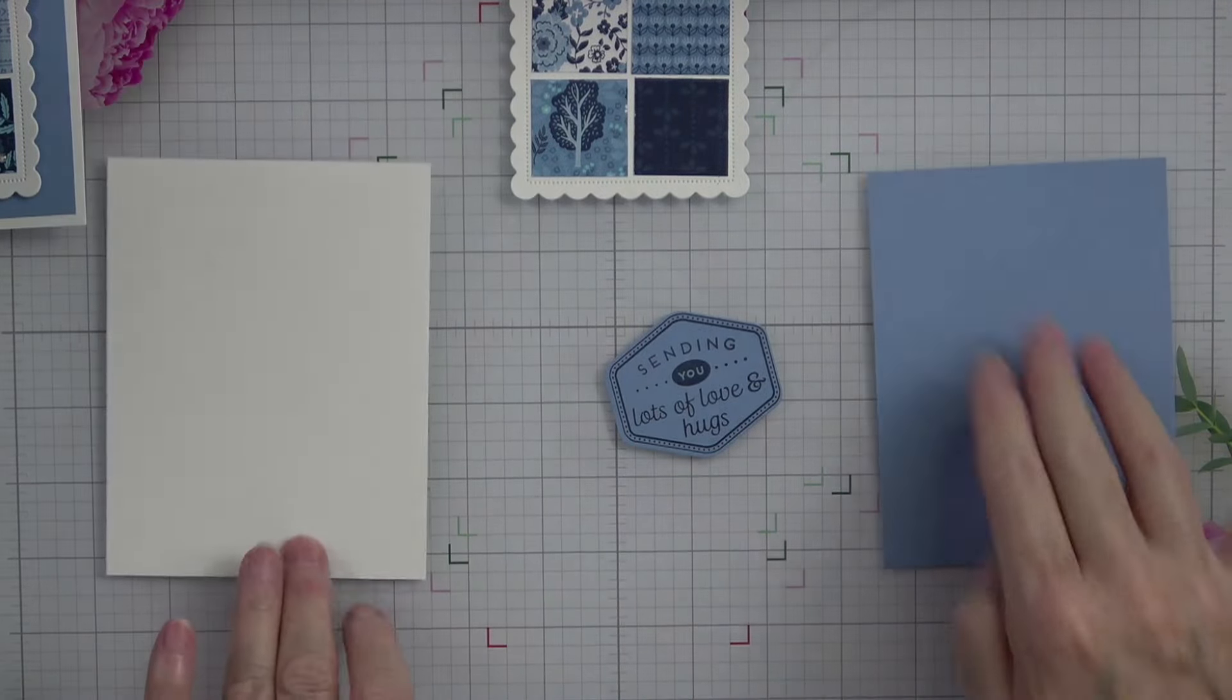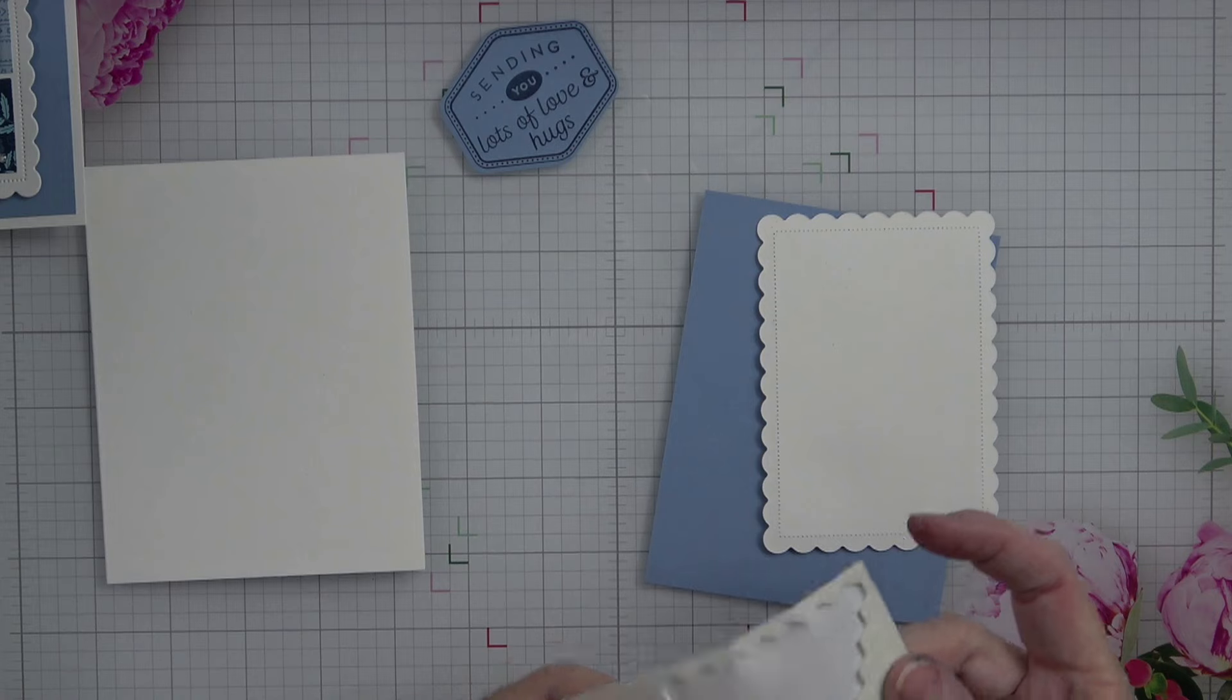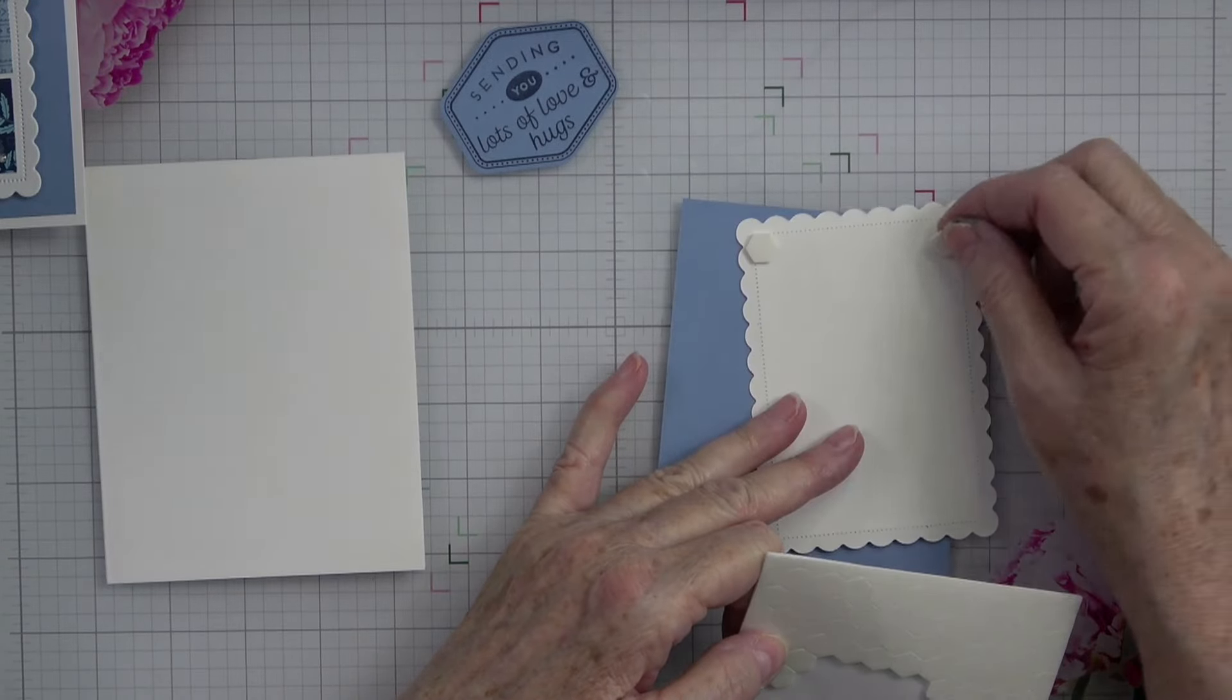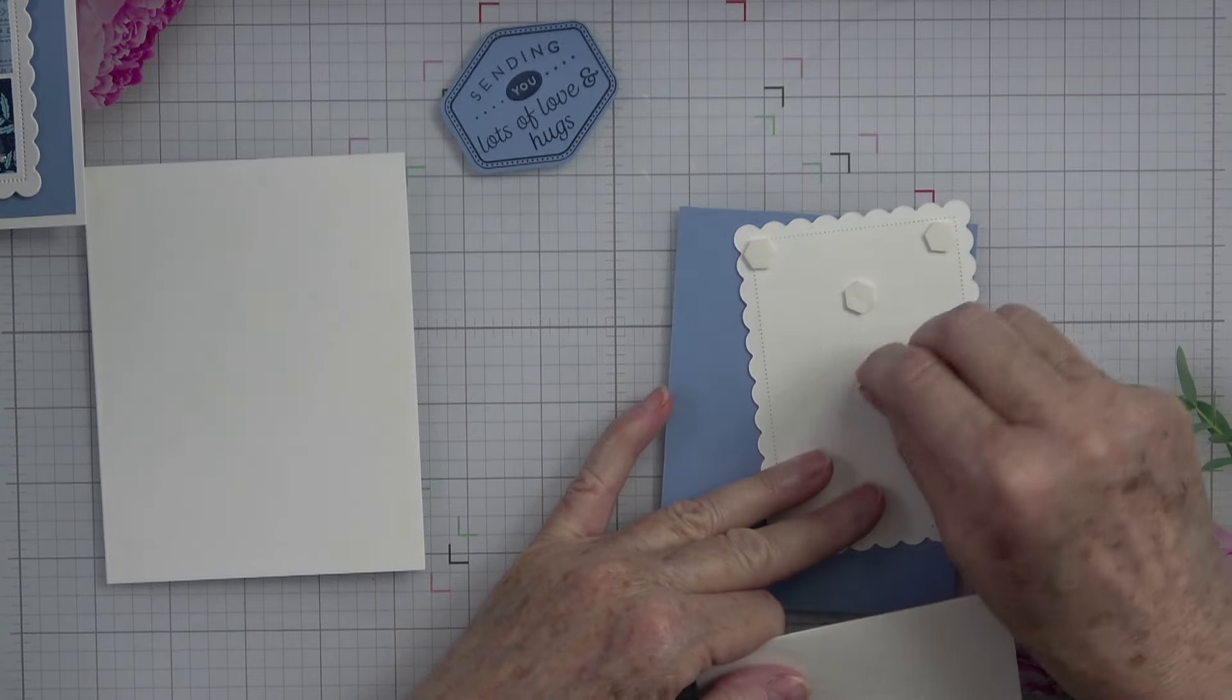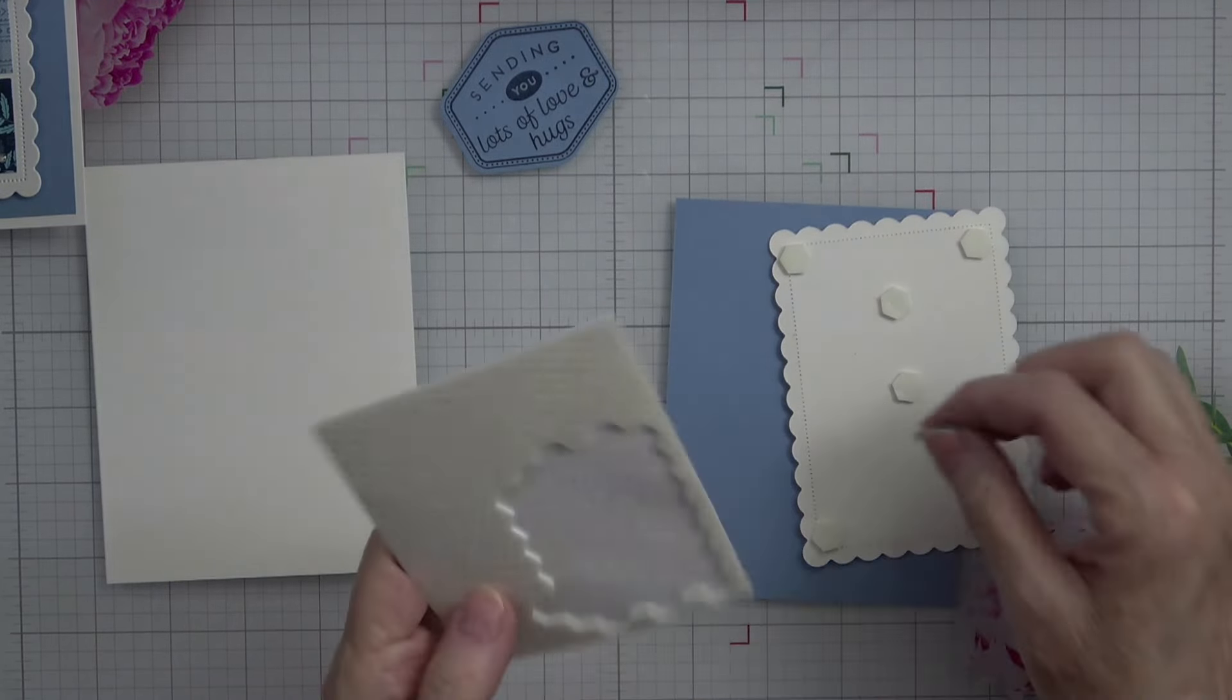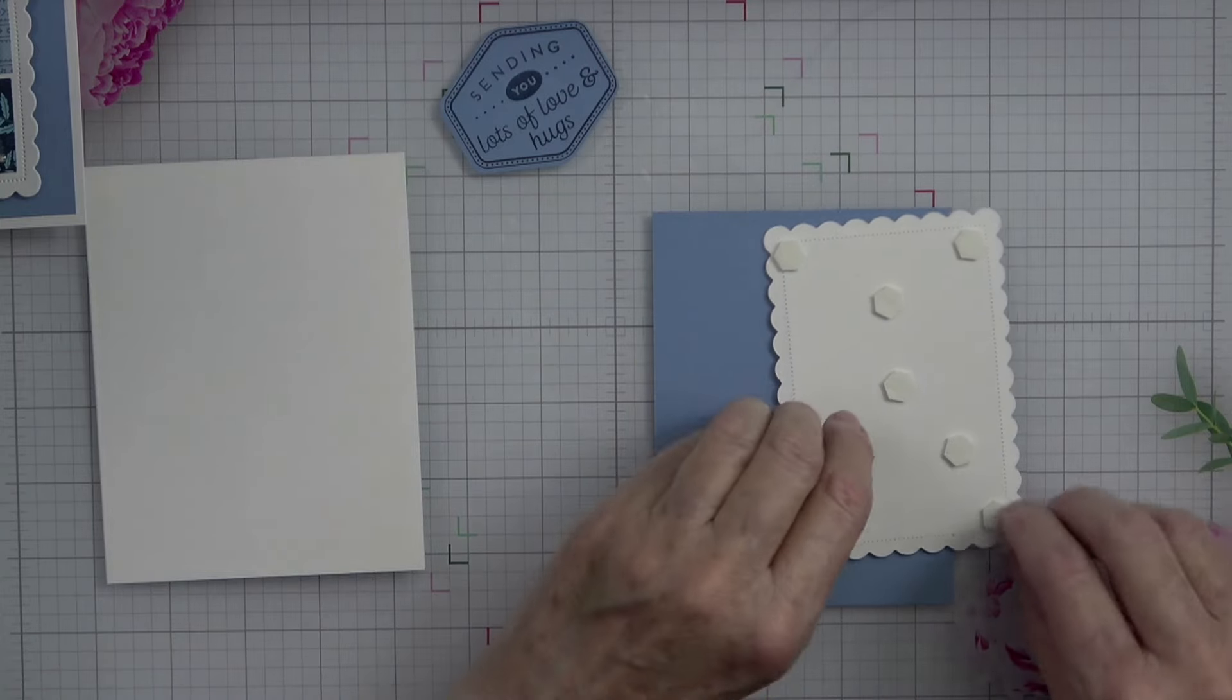Now we're going to go ahead and build our cards. So the first thing I want to do is I want to put dimensionals on the back of my little scalloped piece. So I'm going to put one there, one there, one here. I think that will be sufficient.